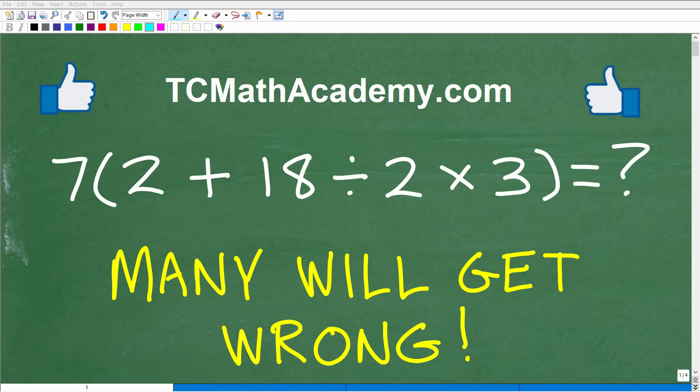Okay, can you solve this basic math problem? Well, hopefully you can, and let me go ahead and tell you what the problem is. Of course, you can see it, but what we have is 7 times parentheses, 2 plus 18 divided by 2 times 3, in parentheses.